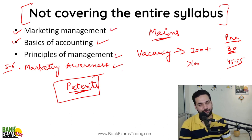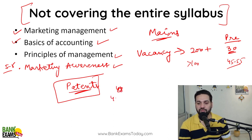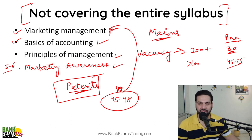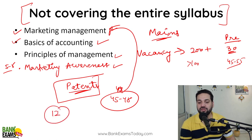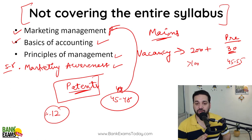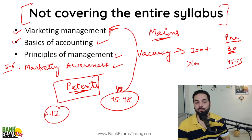Obviously marketing management is important — you can expect 45 to 48 questions directly from marketing management. If you are very good in marketing management, you'll score 30 plus and crack the exam. But why are you leaving those 10 to 12 questions behind? Why are you not studying principles of management, basics of accounting, and marketing awareness?